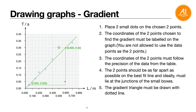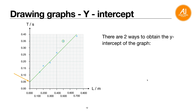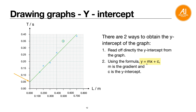Calculate the gradient using the formula: gradient = (y₂ − y₁) / (x₂ − x₁). For the y-intercept, there are two ways: you can read it off directly from the graph where the line cuts the y-axis — make sure the axis starts from zero — or you can use y = mx + c, substituting one of the chosen coordinates along with the gradient you calculated to solve for c.